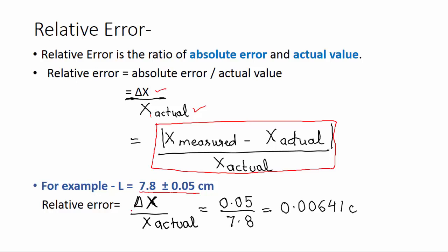For example, we have this value of length and can find relative error. The absolute error is 0.05 cm and actual value is 7.8 cm. We divide those: 0.05 / 7.8, which gives us 0.00641. That's the relative error of length.